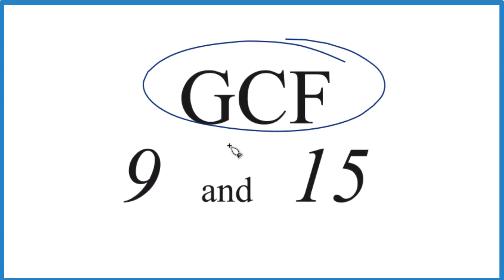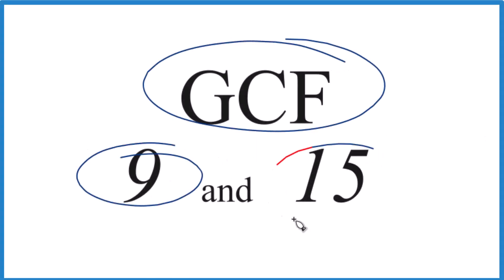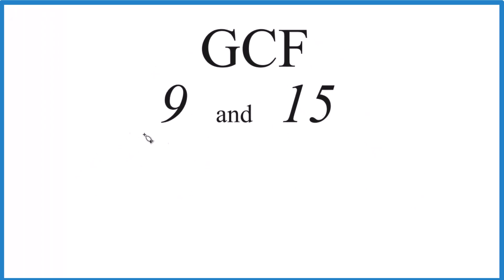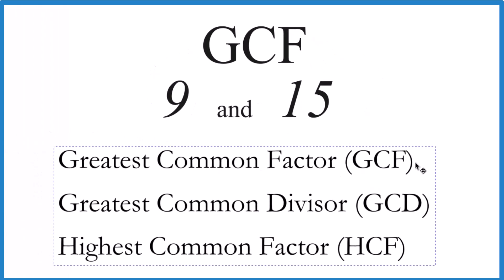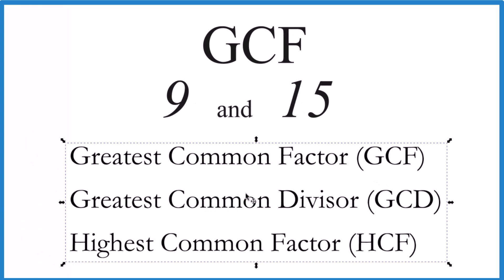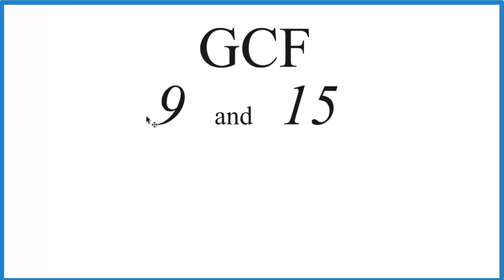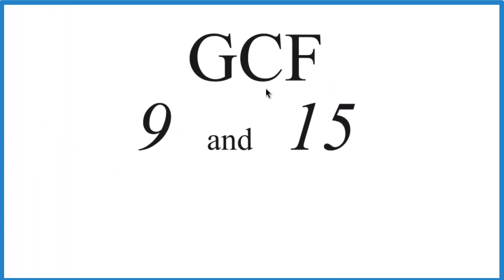Let's find the greatest common factor for 9 and 15. The GCF — you might also hear it called the greatest common divisor or the highest common factor. These are all the same thing. What we need to do is make a list of the factors of 9 and 15, then we can find the greatest common factor between the two numbers.